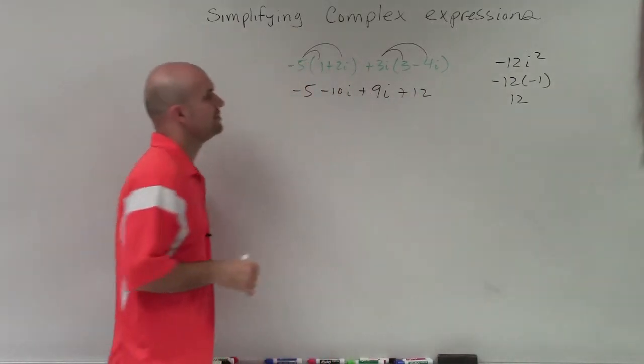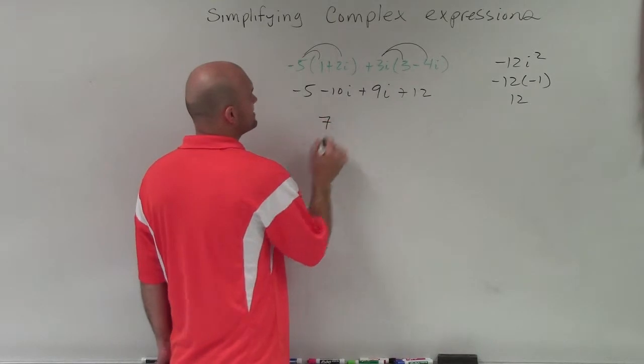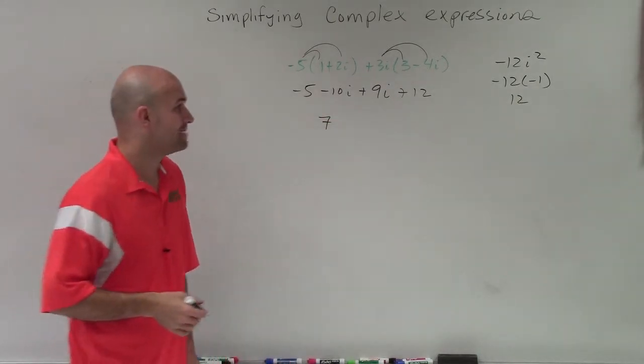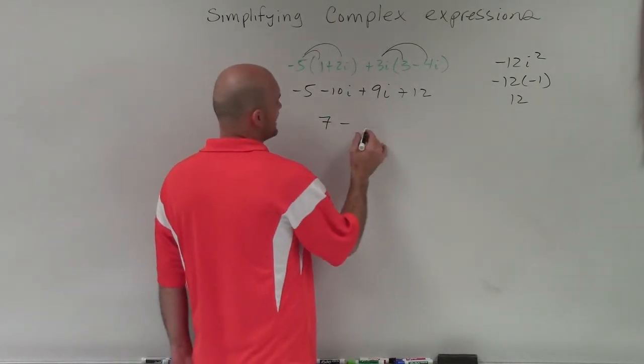All right, so negative 5 plus 12 is going to be now a positive 7. And negative 10i plus 9i is going to be negative i.